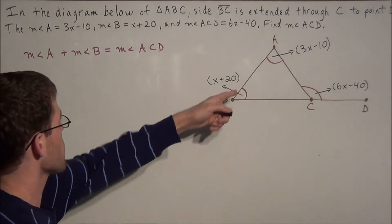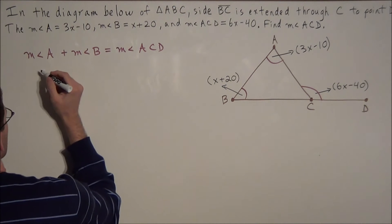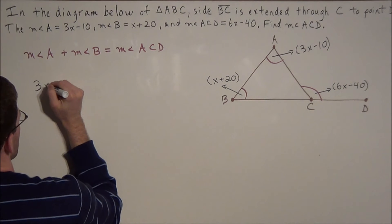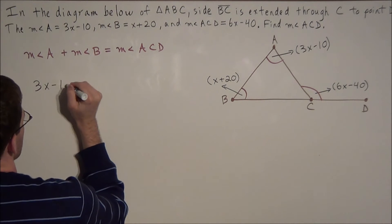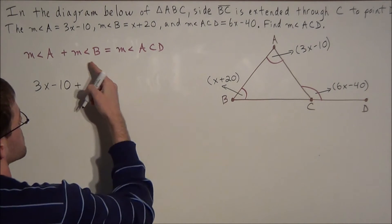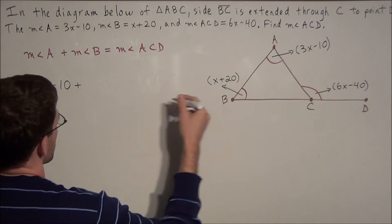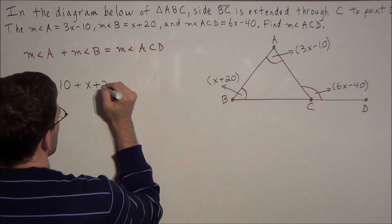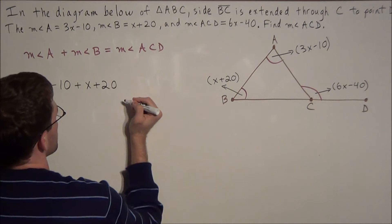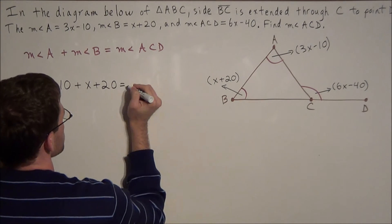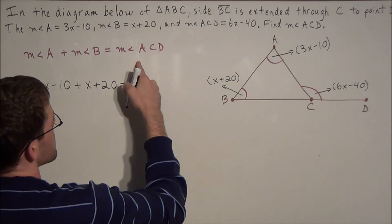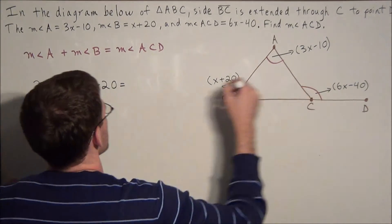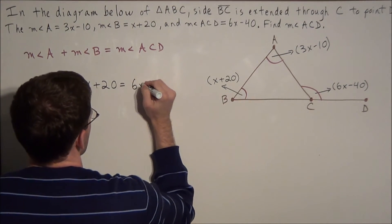Now we can make a direct substitution. We replace the measure of angle A with 3x minus 10, plus the measure of angle B expressed as x plus 20, and set that equal to the measure of angle ACD which is 6x minus 40.